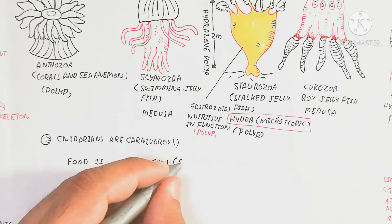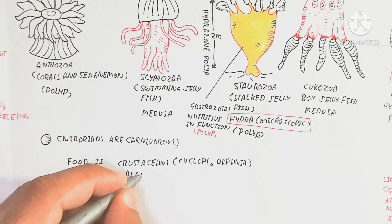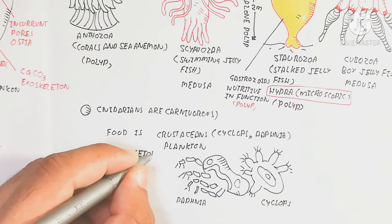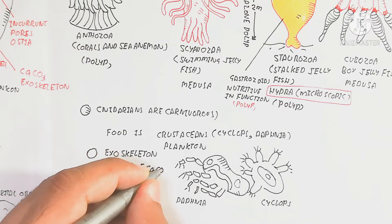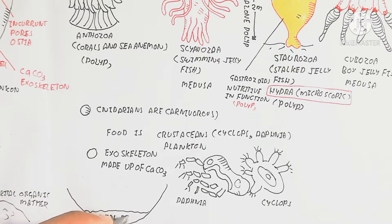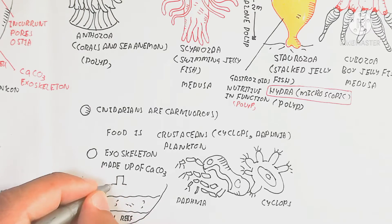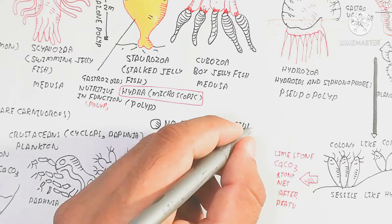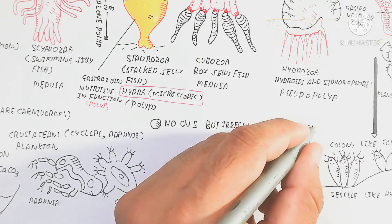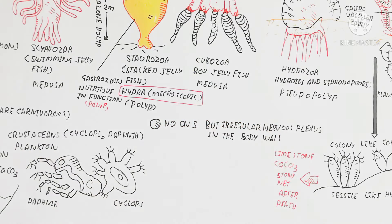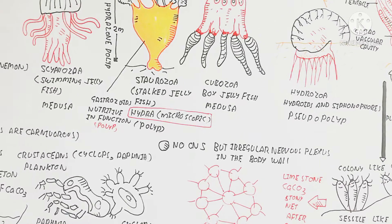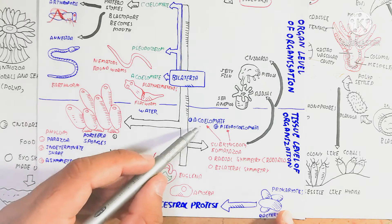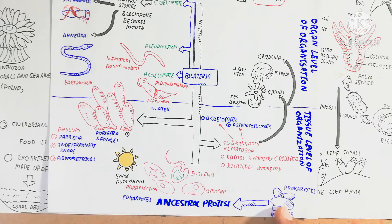Cnidarians are carnivorous, meaning they eat other animals, making them predators. This is distinct from omnivores and herbivores. The exoskeleton is made of calcium carbonate, and after death produces coral reefs. Crustaceans, Cyclops, and Daphnia are zooplankton that serve as food. There is no central nervous system, but a network of neurons called the nerve net is present throughout the phylum.